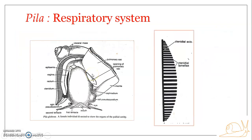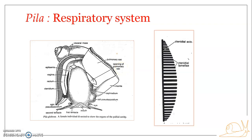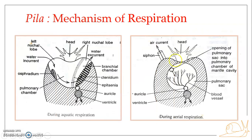Now we move to the next respiratory structure — the pulmonary sac. The pulmonary sac is a bag-like structure developed from the mantle wall. It hangs from the roof of the mantle cavity into the pulmonary chamber, and opens into the pulmonary chamber through an aperture known as the pulmonary aperture or pneumostome.